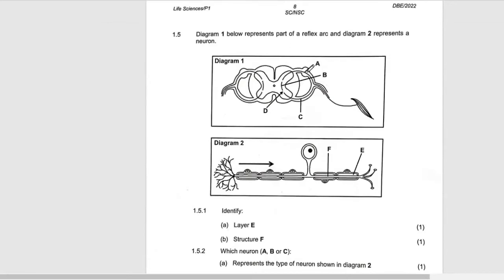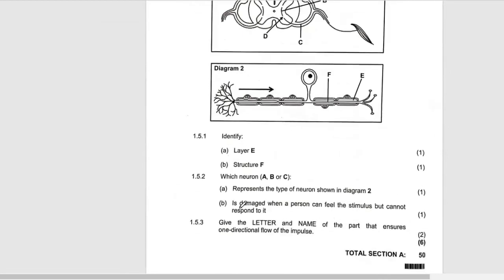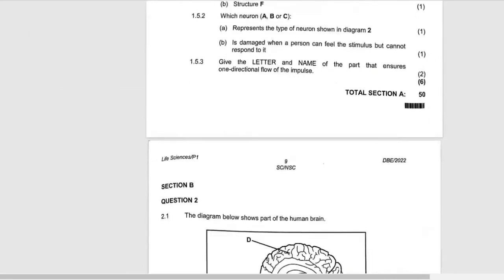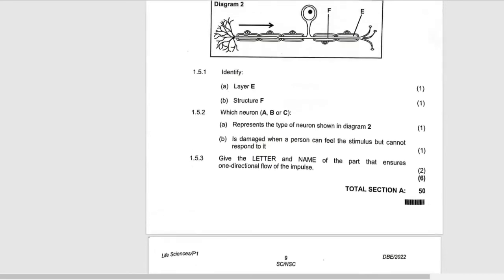Which neuron, if damaged, means a person can feel the stimulus but cannot respond? It means that the sensory neuron is working—that's why you're able to feel—but the motor neuron cannot work, that's why you can't respond.